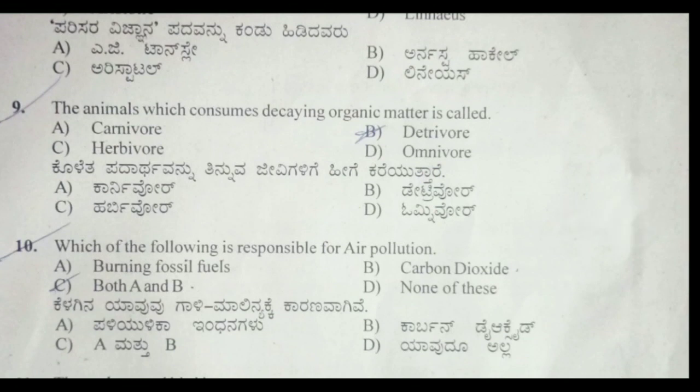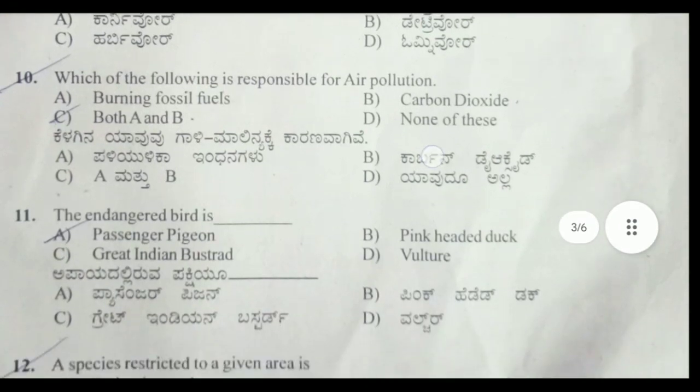Ninth question: the animals which consume decaying organic matter are called detritivores. That is the correct answer.